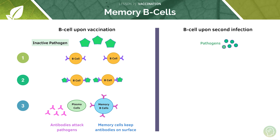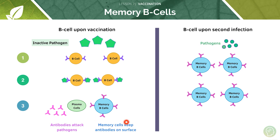Upon second exposure to the pathogen — remembering that the vaccination was our first exposure — we already have memory B cells mobilised in our blood. In a similar way to before, we get a really rapid response where antibodies are produced in massive quantities very quickly to destroy the pathogen. Vaccinations basically mimic the first infection, allowing the body to respond very quickly to a subsequent real exposure.